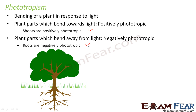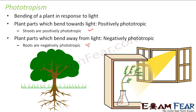You can perform this experiment yourself. If you have a plant kept inside your house in front of a window where light comes only from one direction, one side of the plant will be shady. In due course of time, you will see the shoot bends towards the direction of light and the roots gradually go away from it. So shoots are positively phototropic and roots are negatively phototropic. Plant hormones play a role in this bending, which we will discuss later.